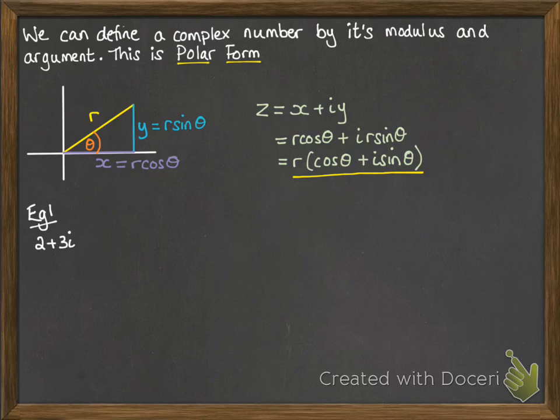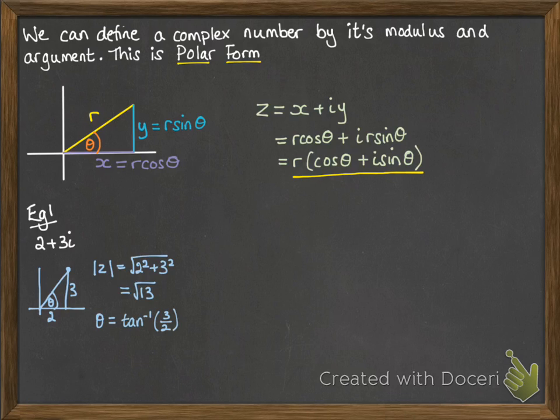Okay, so for an example, 2 plus 3i, we're going to express it in polar form, so we need to think about what it looks like. So draw yourself a little sketch. Then the modulus will be the square root of 13. And then we need to work out that angle, which we keep things in radians usually for these questions, so that's 0.983. So in polar form, it looks like this.